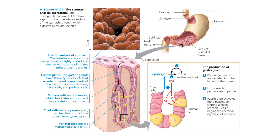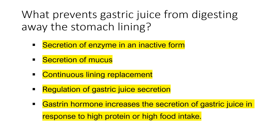What prevents the gastric juice from digesting away the stomach lining? First, secreting pepsin in the inactive form of pepsinogen helps protect the cells of the gastric glands. Mucus helps protect the stomach lining from both pepsin and acid. Regardless, the epithelium of the stomach is constantly eroded, but enough new cells are generated by mitosis to replace your stomach lining completely about every three days.